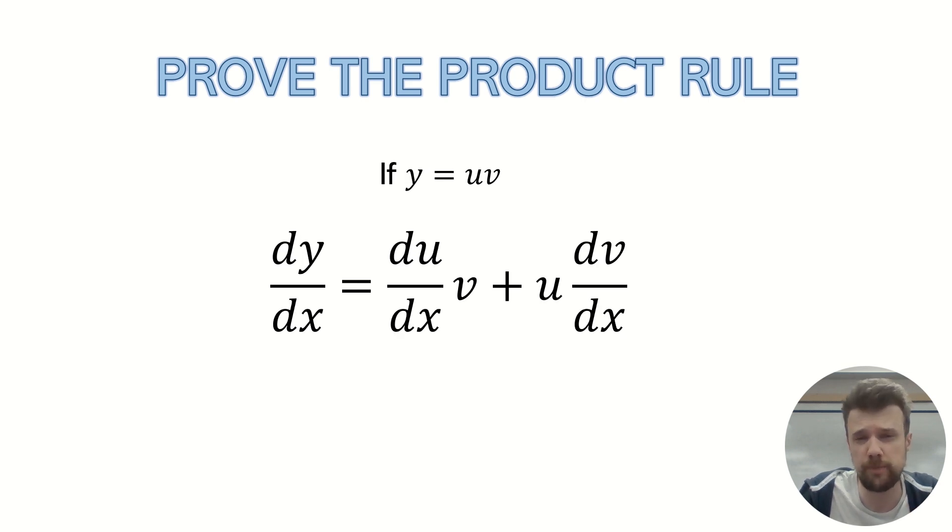Of course, the product rule is this idea of if we have a function that can be expressed as something times by something else, people often write that as y equals u times by v, then dy over dx, the derivative of that function will be du over dx times by v plus u times by dv over dx.